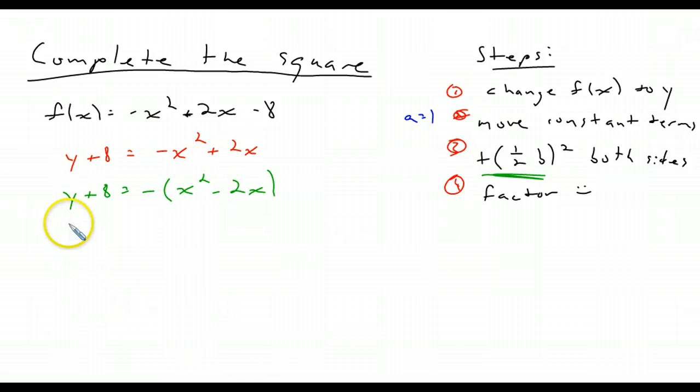Then our completing the square, y plus 8 plus some number, don't really know what it is, equals negative x squared minus 2x plus some number. b divided by 2. So negative 2 divided by 2 is negative 1. Negative 1 squared is plus 1.